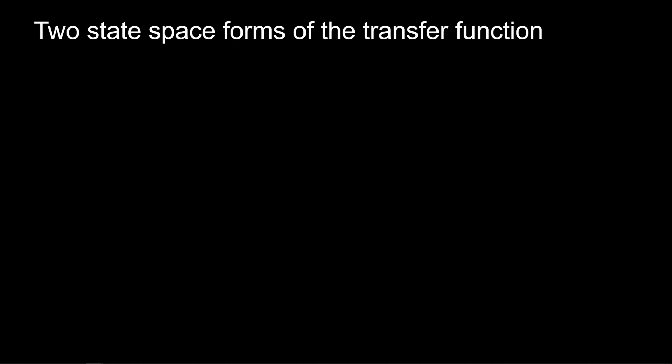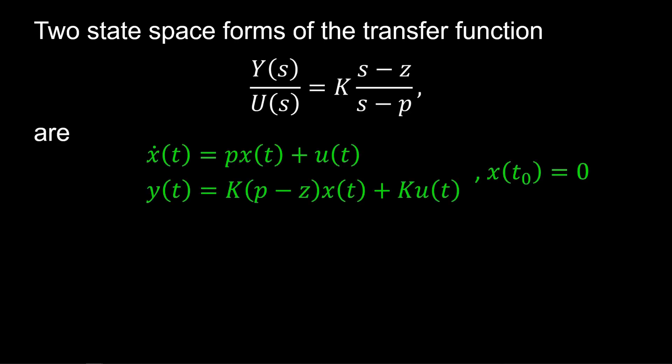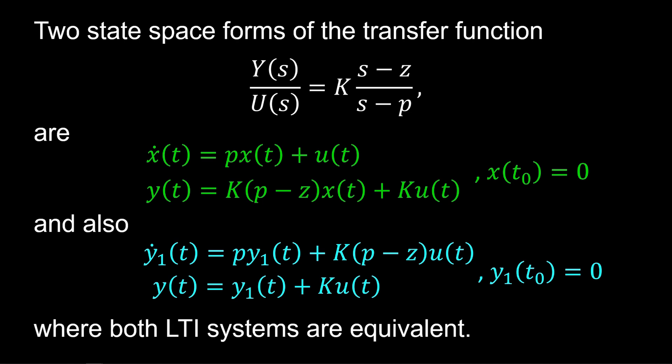We've determined two state-space forms of the lead or lag compensator. The eigenvalue between the two is the same. The difference is in the output equation and the control input matrix B. We expect both state-space systems to provide the same response to the zero initial condition.